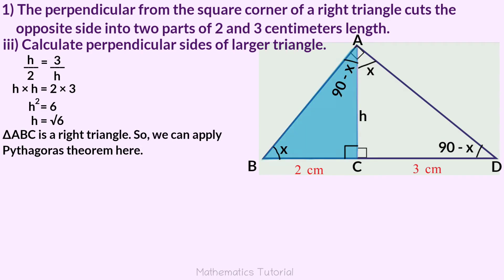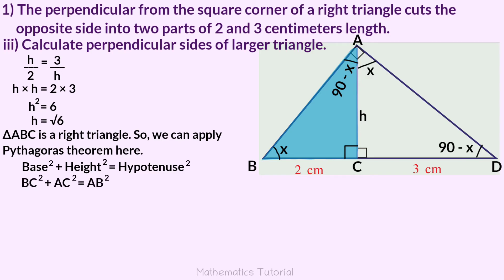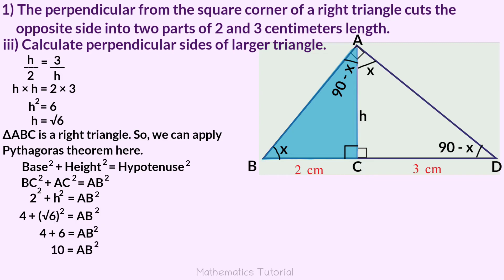Triangle ABC is one right triangle, so let's apply the Pythagorean theorem: base squared plus height squared equals hypotenuse squared. Base BC and height AC are perpendicular sides, and hypotenuse AB is the opposite side. So BC squared plus AC squared equals AB squared. That is 2 squared plus H squared equals AB squared. 4 plus root 6 squared equals AB squared. 4 plus 6 equals AB squared. 10 equals AB squared.